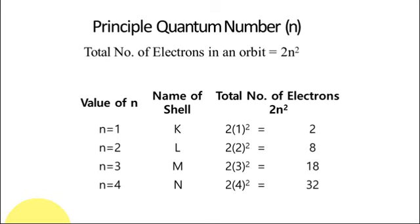On the next slide, you can see n equals 1, 2, 3, 4 — that is, K, L, M shells. The number of electrons each shell contains is given by the formula 2n². The K shell has 2 electrons. The L shell, where n equals 2, has S and P orbitals — S has 2 electrons and P has 6 electrons (Px, Py, Pz), giving 8 electrons total. For n equals 3, S, P, D gives 18 electrons, and n equals 4 gives 32 electrons.